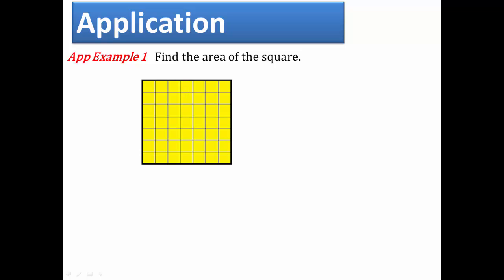From geometry, we know that all four sides of a square are the same length. In order to find the area of a square, we must multiply the length of the sides of the square times itself.